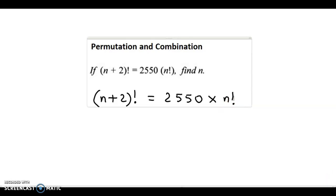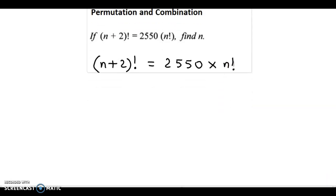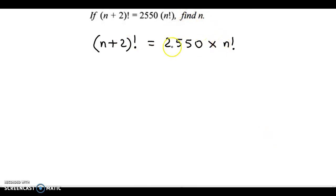Now, we bring all the n terms on one side. So, we just transfer n! over here to the left hand side. Therefore, we get (n+2)!/n! = 2550.